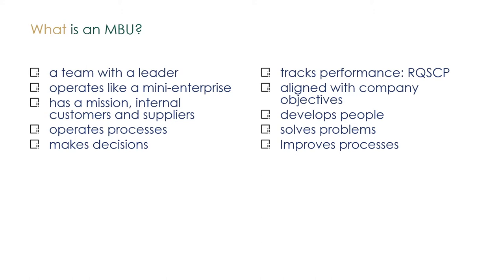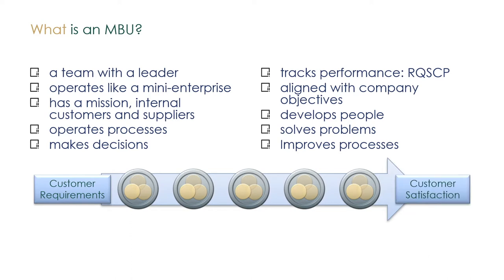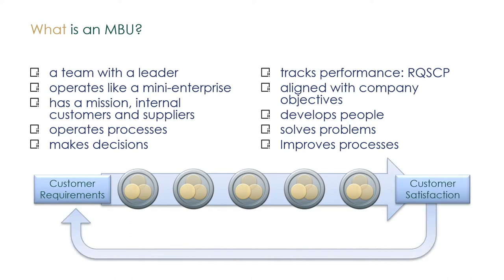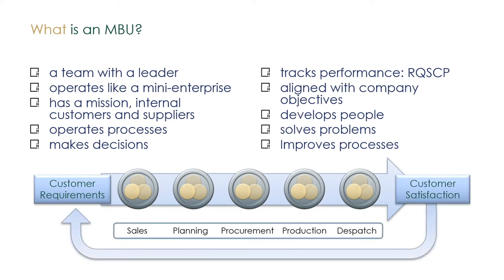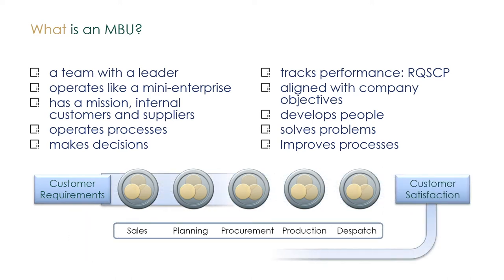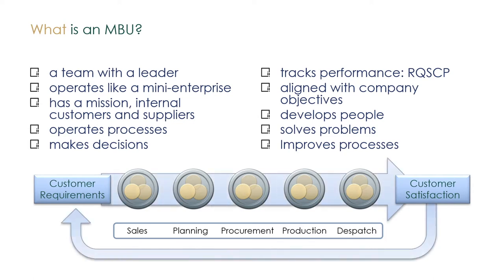The team develops people, solves problems, and improves processes. The diagram below shows an example of operational MBUs linked together to continually deliver the right product to the customer on time and at the right price.